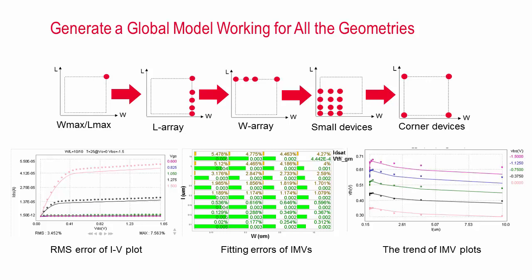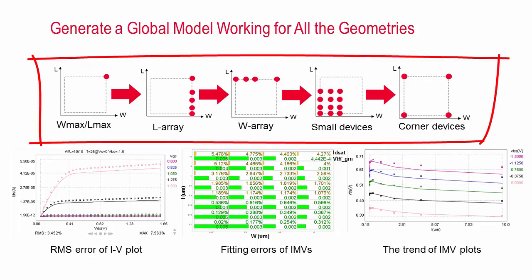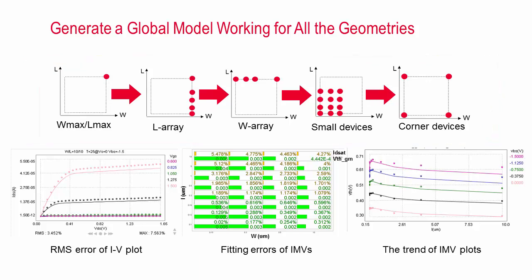Moving forward on the extraction flow, we continue to extract other model parameters related to W-array with fixed gate length but varying gate width. Then, we look at small devices and the corner devices respectively. Several iterations on the model parameters may be needed. Model fitting always requires trade-off since you will never find the perfect model for a real device. Your goal is to make the model fit the data for as many geometries as possible. You will weigh the geometries and all targets which are important to your circuit design, possibly at the expense of others.